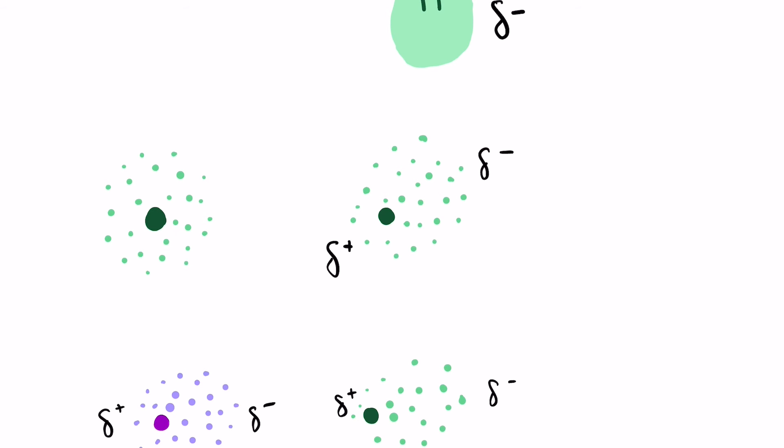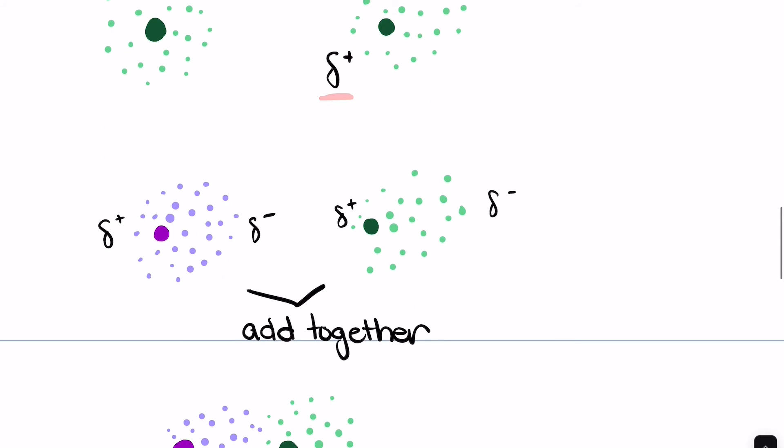Now if this green atom starts exhibiting London dispersion, then these electrons migrate to this side. This side is now electronegative and this side is electropositive. So here is that atom again.